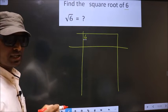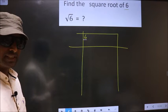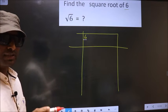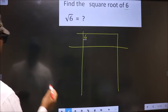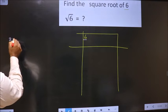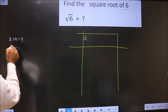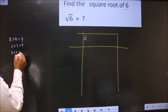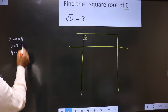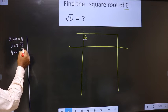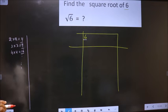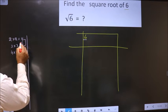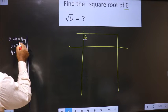6 is not a perfect square. So we should check between which two perfect square numbers 6 lies. Perfect square numbers are: 2×2=4, 3×3=9, 4×4=16, and so on. These numbers are called perfect square numbers. Here we have 6, and 6 lies between 4 and 9. So we take the smaller number, which is 4.